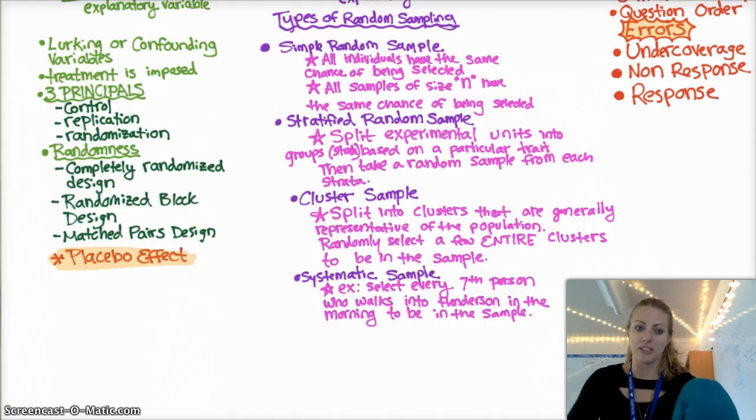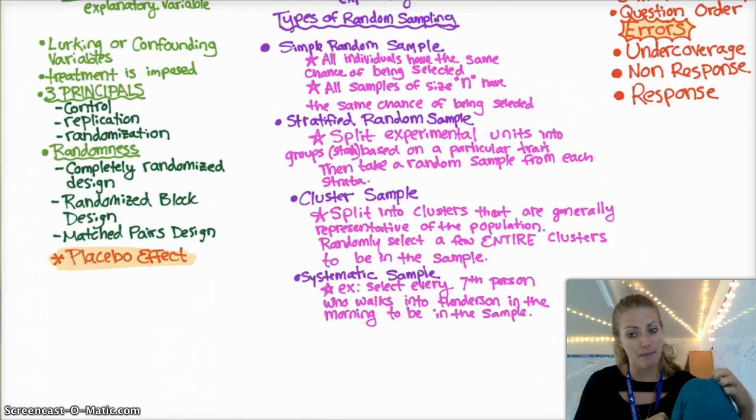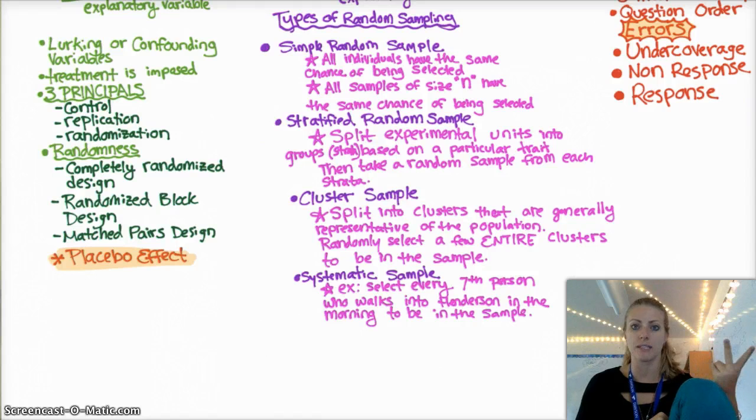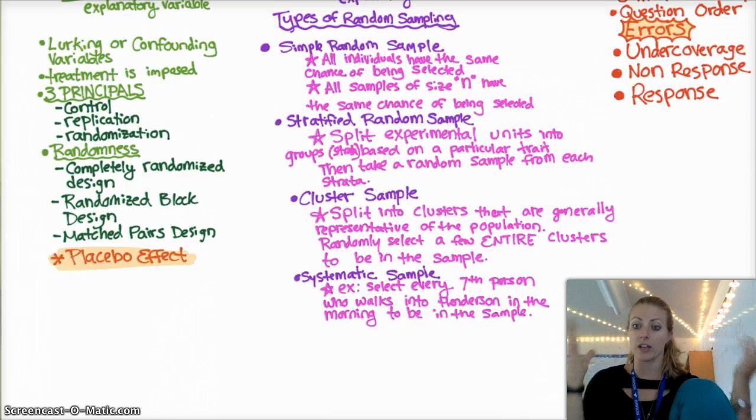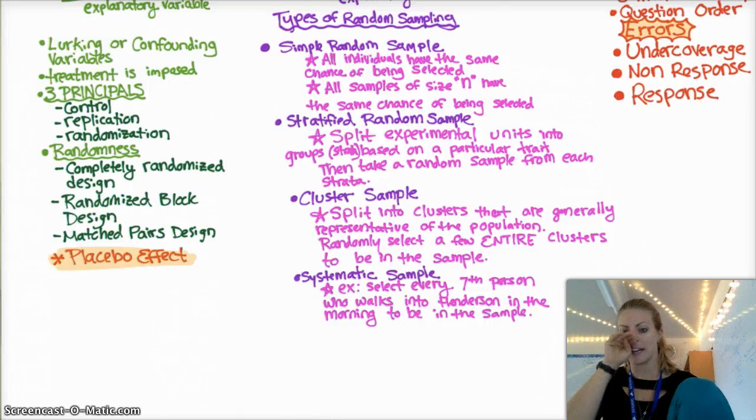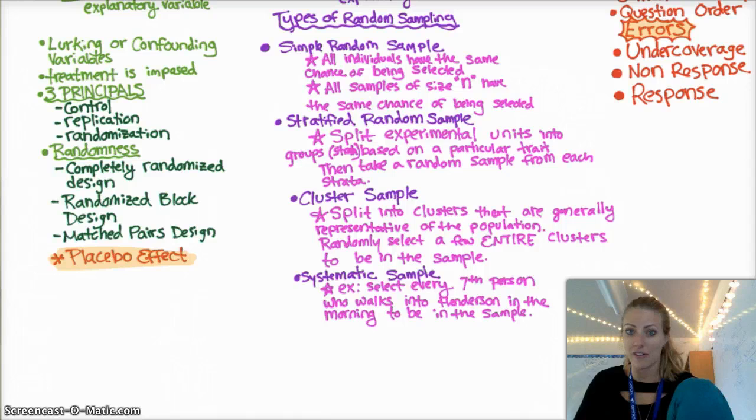And the last thing that we talked about was the scope of inference and what are you allowed to conclude from what. So remember, if you have random sampling, you can infer, make generalizations about a larger population. And if you have random assignment of treatments, you can infer cause and effect. And so if you have both random sampling and random assignment, or random selection and random assignment, you can infer cause and effect for a larger population. But that doesn't happen very often. So, well, you can only conclude what you can conclude. If you conclude something different, then you're doing bad stats.